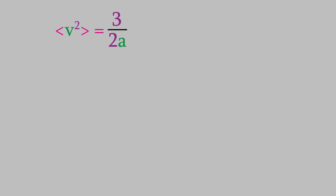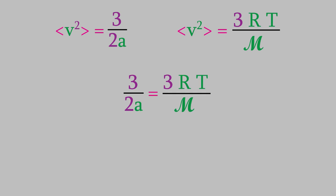But wait. In the previous video, we already determined an expression for the average square velocity. Here it is. If we set these two expressions equal to each other, here's what we'll get. But notice what this equation is telling us. The temperature and molecular mass of the gas are both easy to determine, so the only variable we don't know is a. That means if we solve this equation for a, we'll finally know what a is equal to. If we do that, here's what we get. a is just equal to the molecular mass over 2 times RT.